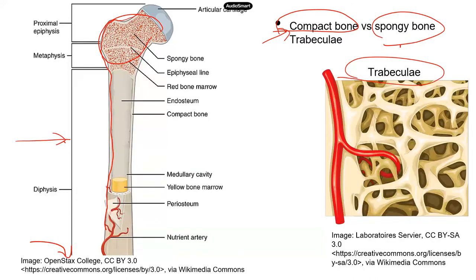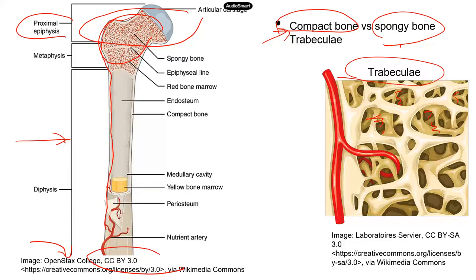The open space in spongy bone is filled with bone marrow in living bones — it can be yellow bone marrow or red bone marrow. The end of the bone is called the epiphysis; the end closer to the trunk of the body is the proximal epiphysis, and the other end is the distal epiphysis. In the middle, you have the diaphysis, which is the shaft of the bone. There is connective tissue on the outside of the compact bone known as the periosteum.